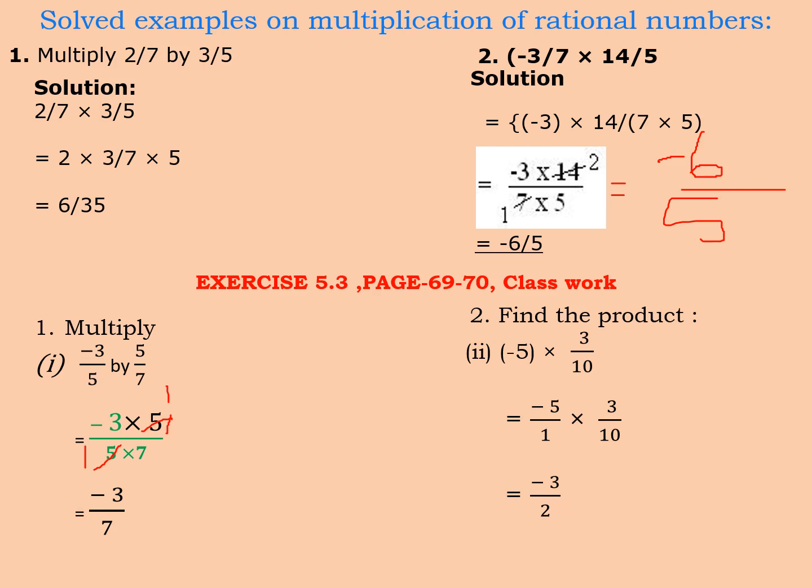Question number 2, second subpart, minus 5 into 3 by 10. Minus 5 is an integer. It can be written in fractional form or as a rational number. How? By writing it as minus 5 by 1. So we will get minus 5 by 1 into 3 by 10. Again you can cancel the terms. 5 ones are 5, 5 twos are 10. So then minus 1 into 3 is minus 3, 1 into 2 is 2.